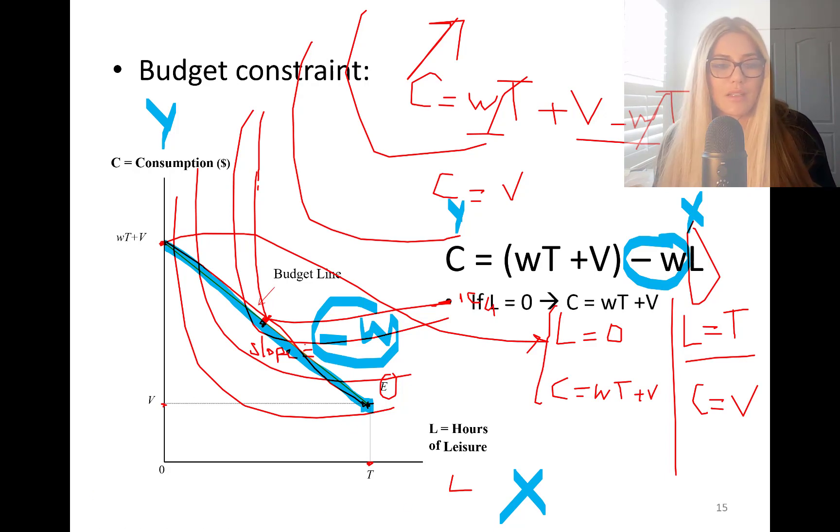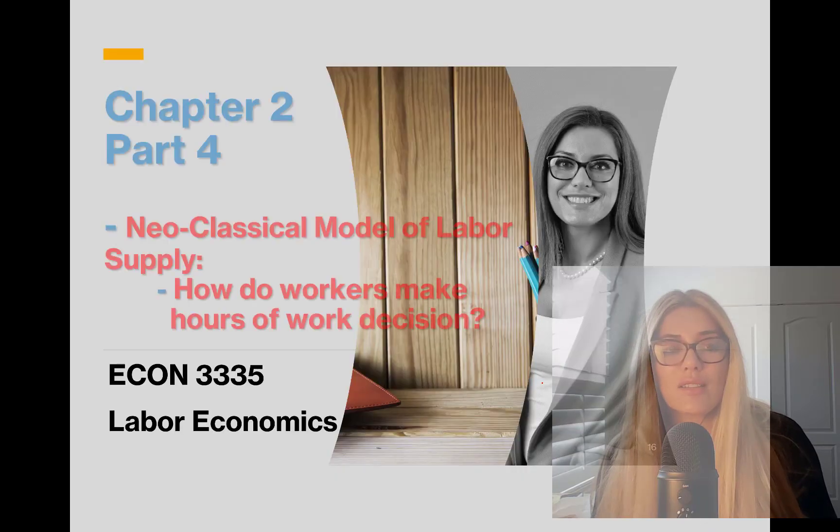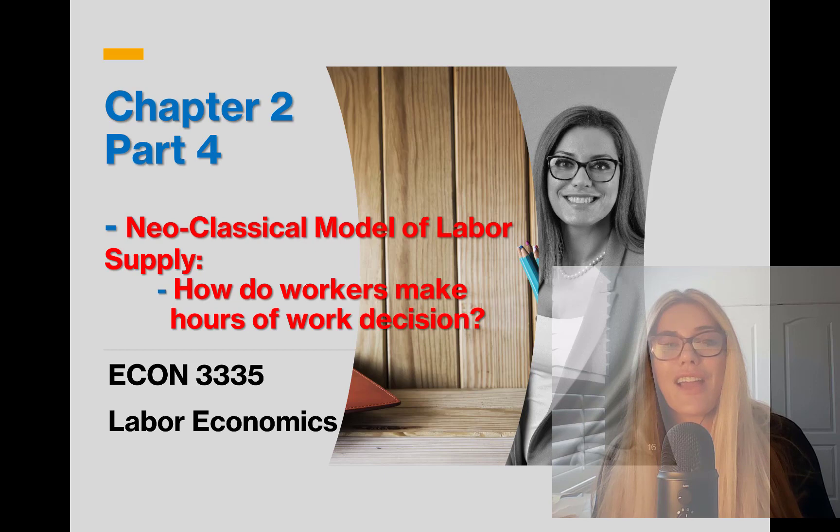So this is exactly what we did. I am going to erase everything. So if leisure is zero, we are here. Consumption is W times T plus V. We are at point A. So we found two extreme points. If leisure is equal to maximum, you are not working, then your consumption is equal to your non-labor income. Slope is negative W. I will see you in part 4. Now we are actually going to learn how to choose between leisure, consumption and hours of work in the next part.